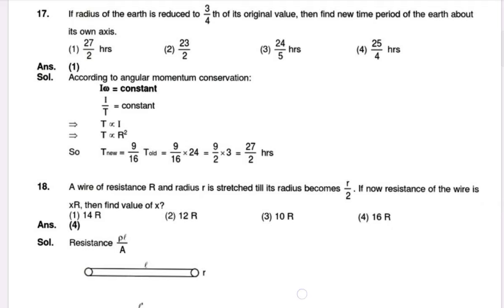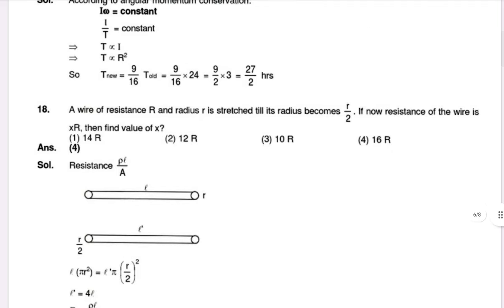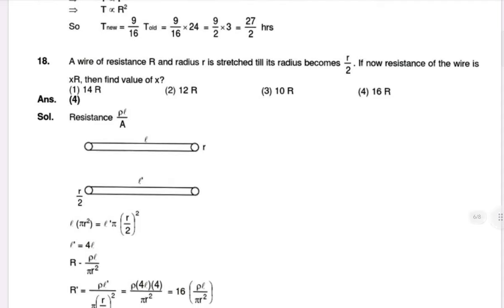A wire of resistance capital R is stretched till its radius becomes r by 2. If now the resistance of the wire is xR, then find the value of x. The resistance formula is rho L by A, and the ratio gives the new resistance.